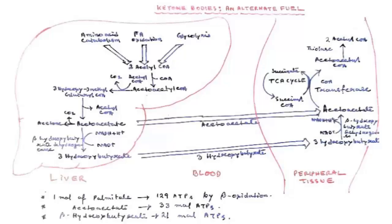Regarding energy calculation: one mole of palmitate can give rise to 129 ATP by the old calculation. Acetoacetate can give rise to 33 mol of ATP, and beta-hydroxybutyrate can give rise to 21 mol of ATP. This is calculated considering that NADH+H⁺ gives rise to 3 ATP and FADH₂ gives rise to 2 ATP.